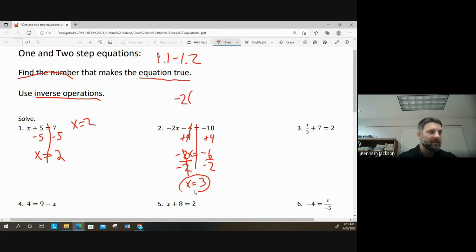3 is the number that makes the equation true. Meaning, if I were to take 3, which is the answer, plug it back into the equation, I'll end up with a true statement. For example, negative 2 times 3 is negative 6. Negative 6 minus 4 is negative 10. 3 is the number that makes it true.